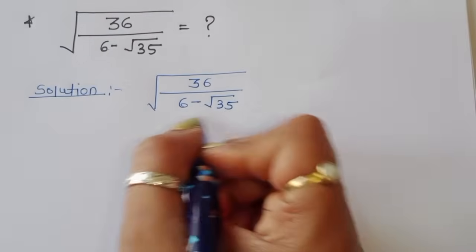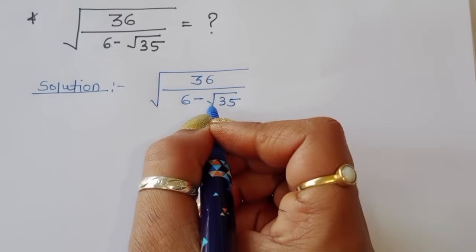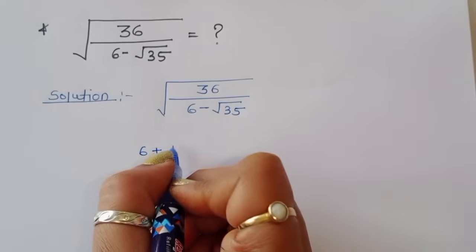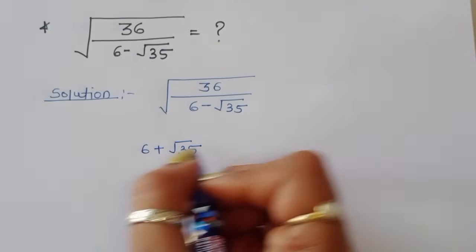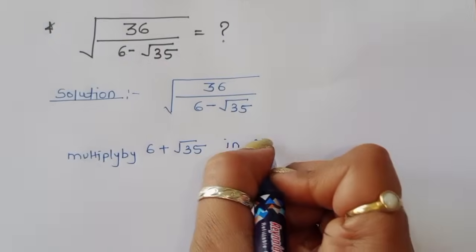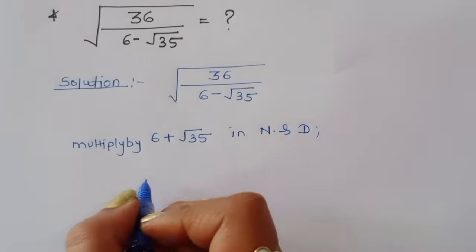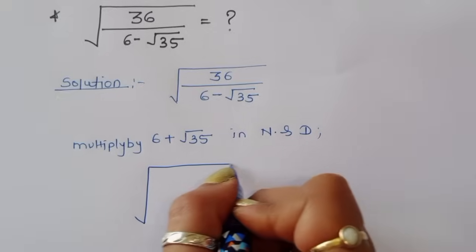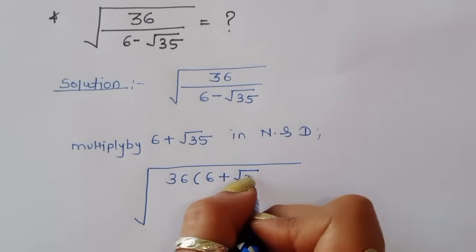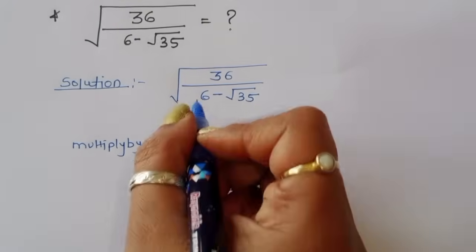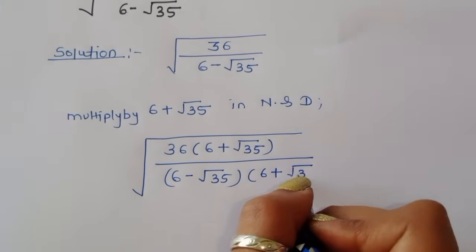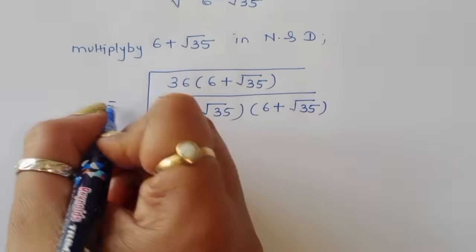We can rationalize this denominator. We multiply in the numerator and denominator by the conjugate: 6 plus square root of 35. So we multiply by 6 plus square root of 35 in numerator and denominator, giving us 36 times (6 plus square root of 35) divided by (6 minus square root of 35) times (6 plus square root of 35).